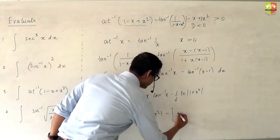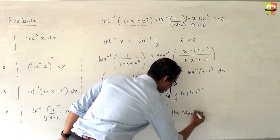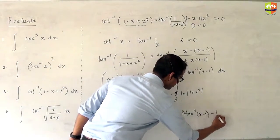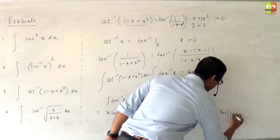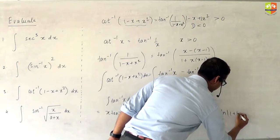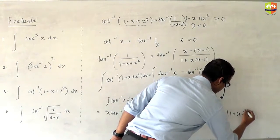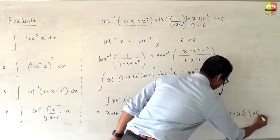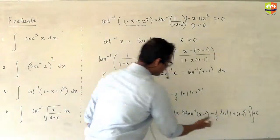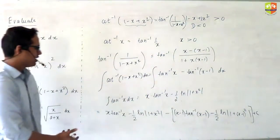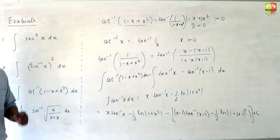Minus, now the same thing you have to repeat for the tan⁻¹(x−1) term, just replacing x with x−1. So the answer would be (x−1)·tan⁻¹(x−1) minus (1/2)·ln|1 + (x−1)²|. You may want to open the bracket and cancel out some terms and take things common.